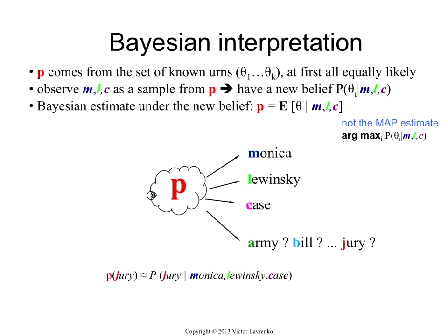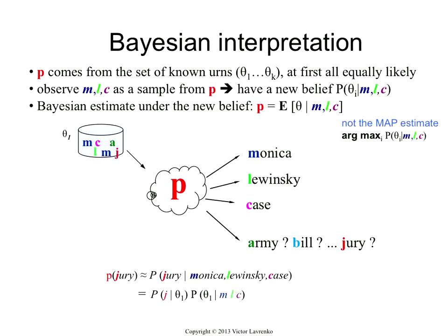Now, if that was the case, how would I estimate things? I have these three observations, I have a bunch of possible urns, and this P is just one of them — I just don't know which one. So it could be the first one, and maybe my first distribution theta has the following words in it. So the way I would compute, if that was the distribution P, then the probability of observing 'jury' on the next trial is simple.